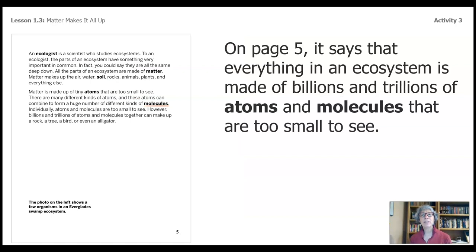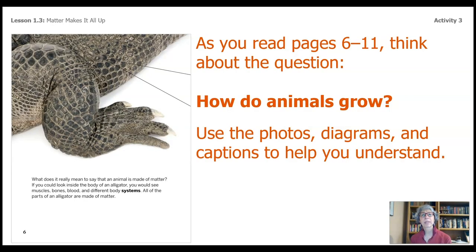Let's take a look at page five. Everything in an ecosystem is made up of billions and trillions of atoms and molecules that are too small to see — keep that in mind. As you read pages six through eleven, think about this question: how do animals grow? Use the photos, diagrams and captions to help you understand.